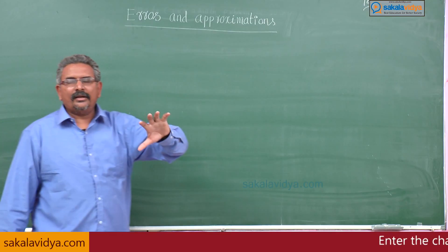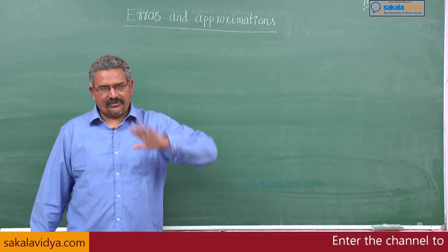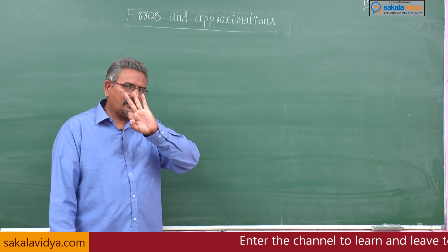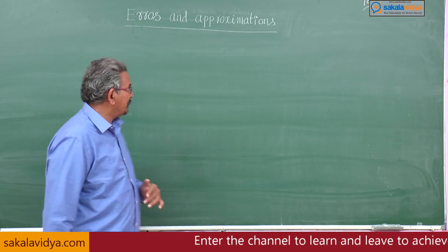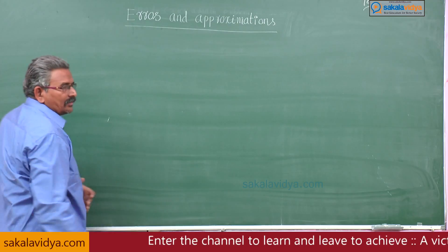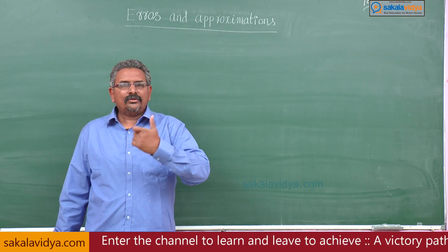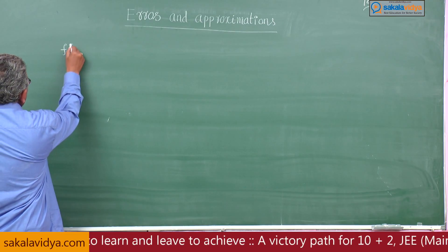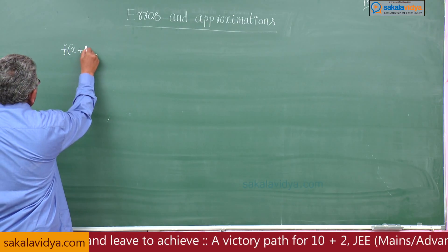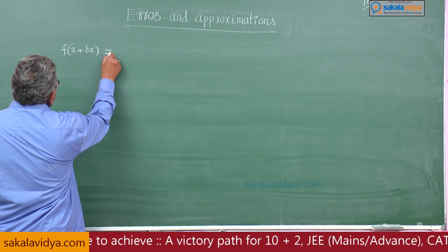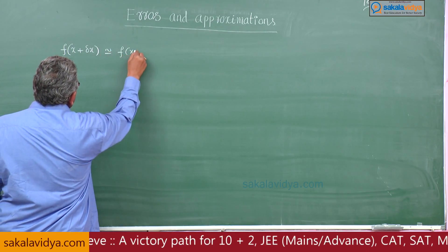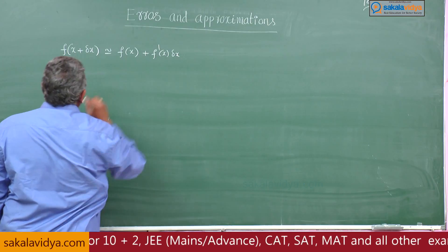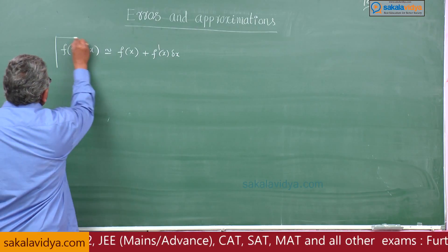Some shortcuts regarding entrance examinations. So far we have discussed three formulae. The third formula is: f of x plus delta x approximately equal to f of x plus f dash x into delta x. This is the formula we know.